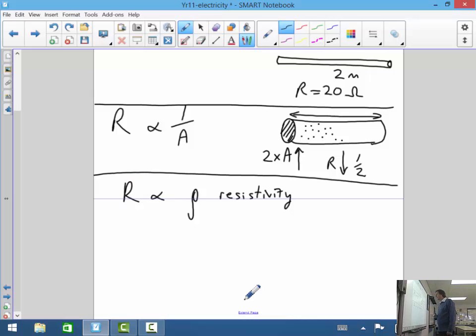So the greater the resistivity, the greater the resistance will be. So that's another thing to use later on. That's the symbol rho. It's a Greek letter. But it just means the resistivity. And that will be given to you in tests and stuff like that, in a table or in a question.